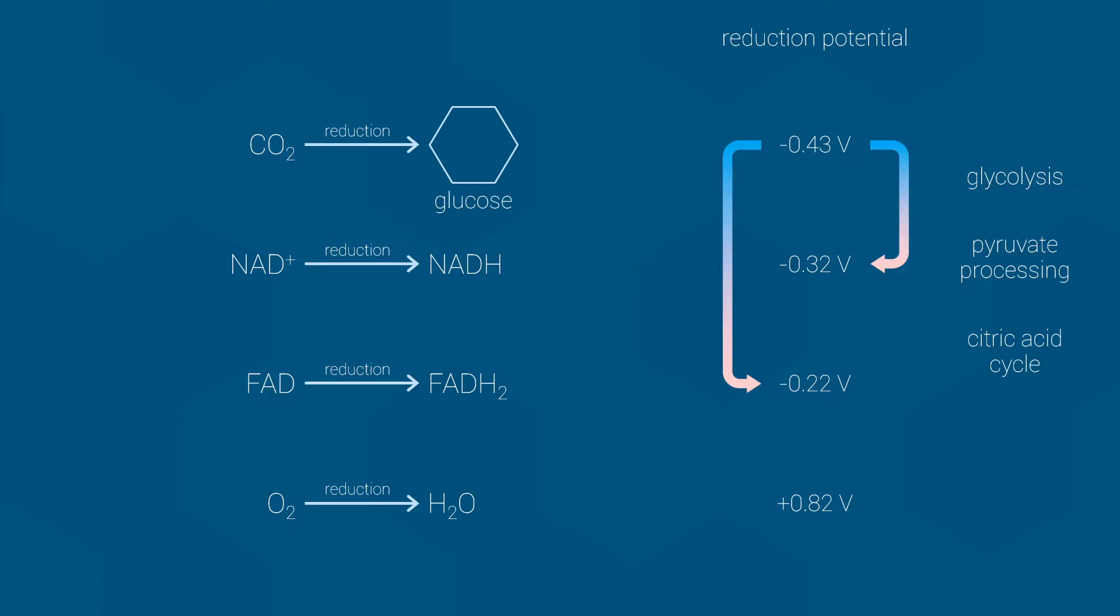Returning to the electron carriers, notice that they are higher on the table than oxygen and water. This means that their electrons can be spontaneously transferred to oxygen to form water, releasing energy. It is actually this release of energy that cells use to produce most of their ATP, thereby capturing the energy for later use. This happens during the final step of aerobic respiration, known as oxidative phosphorylation. Let's talk about how it works.